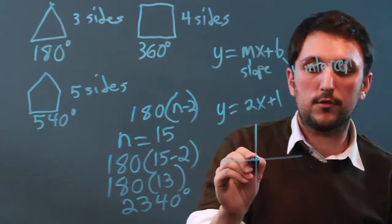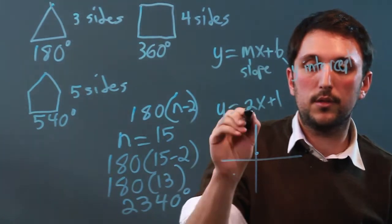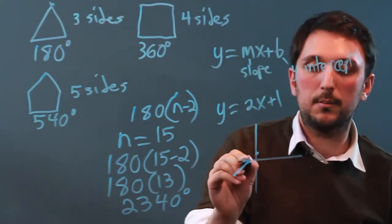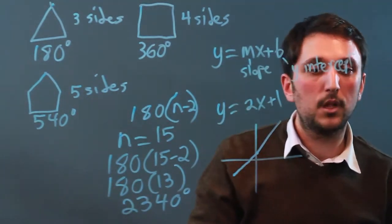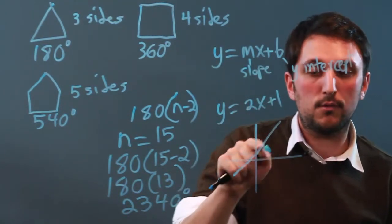The 1 is your y-intercept, so we go up 1, and this is a positive slope, so it's going to be coming up like that. And that makes it a lot easier than having to plug in every point, every time.